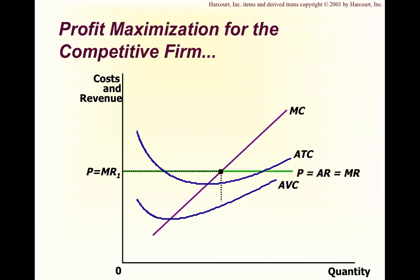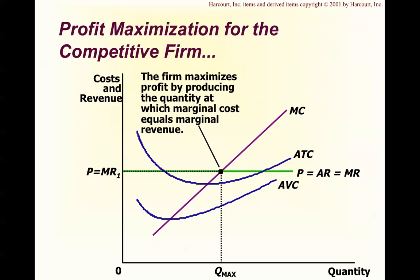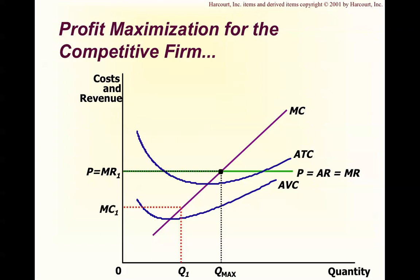We can see graphically what's going on. The demand curve for the individual firm is horizontal, and the firm maximizes profit by producing the quantity at which marginal cost equals marginal revenue. You can see the upward-sloping MC curve with MR equals price equals average revenue. If the firm is producing at MC1 and Q1 where marginal revenue is greater than marginal cost, the firm should produce more. If the firm is producing at the blue line — MC and Q2 — where marginal cost is greater than MR, the firm should reduce production. It's a seesaw, and we go back and forth until we hit MR equals MC.